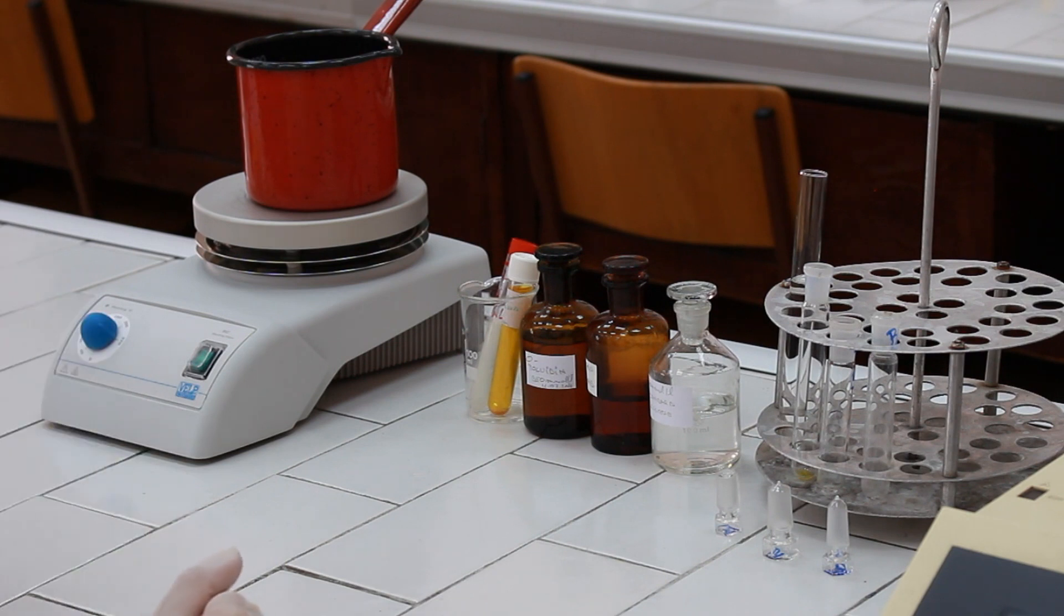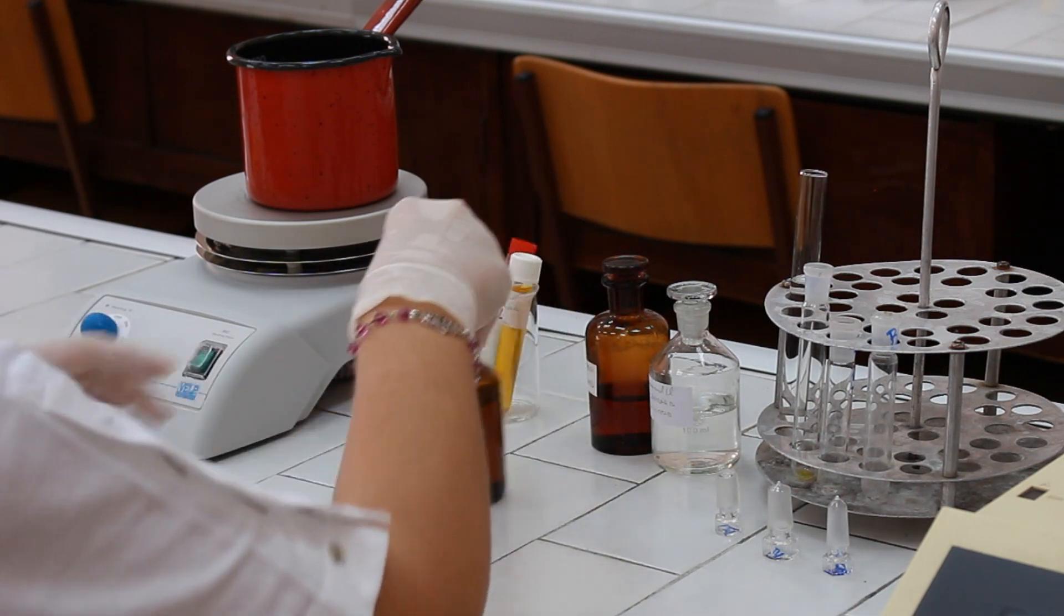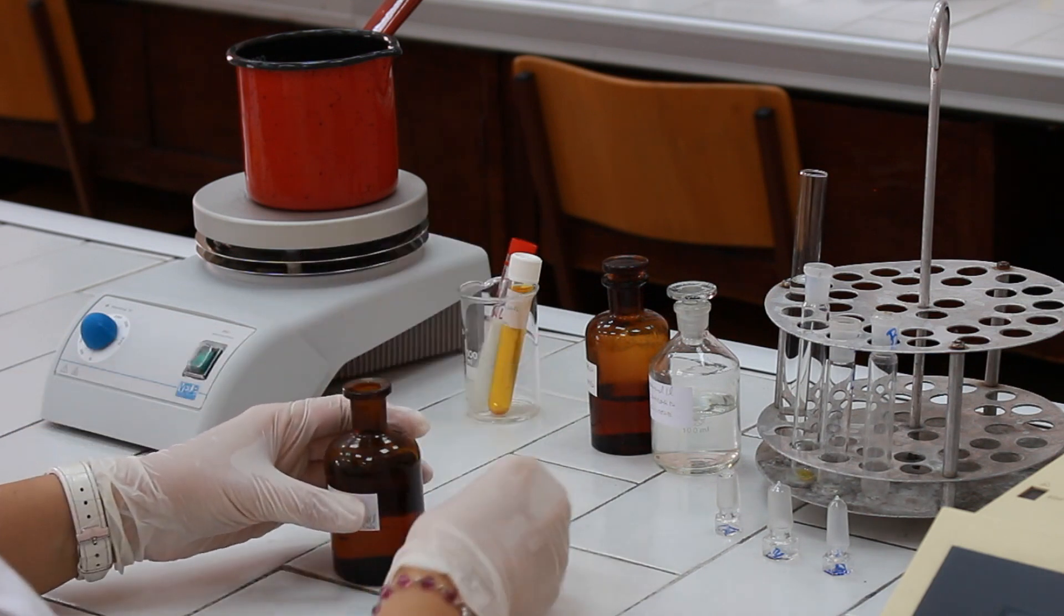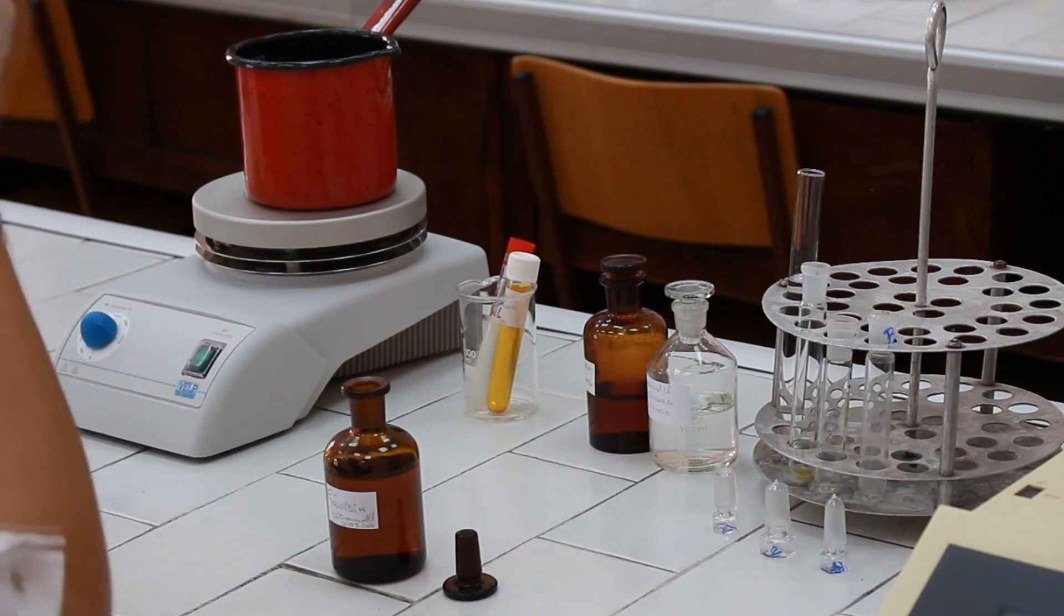Now we need to pipette three and a half milliliters of orthotoloidin to each test tube.